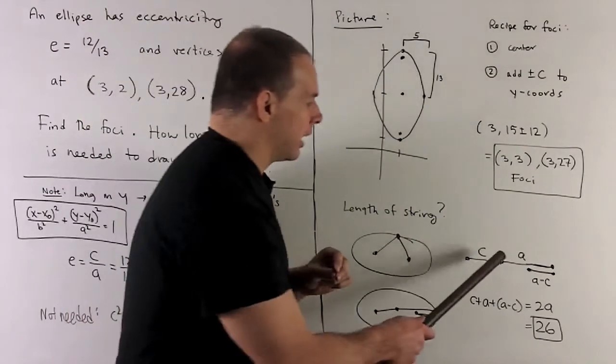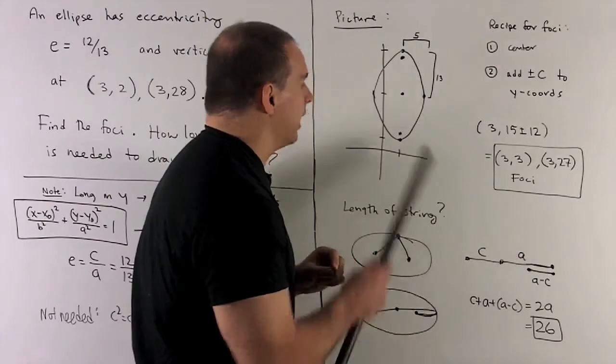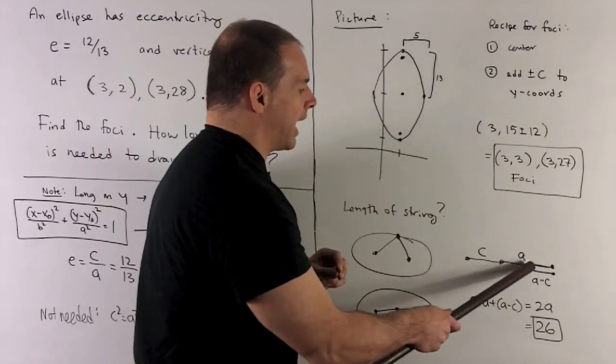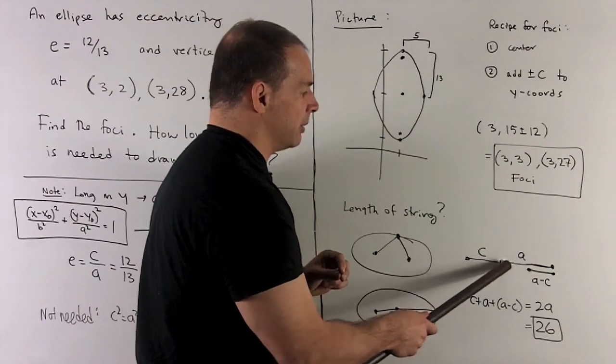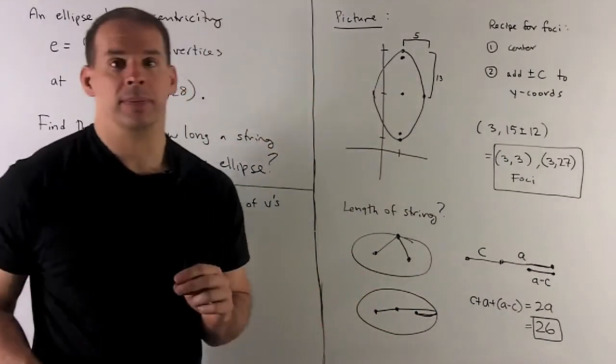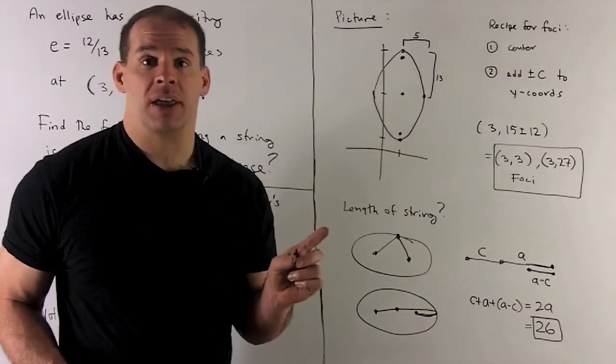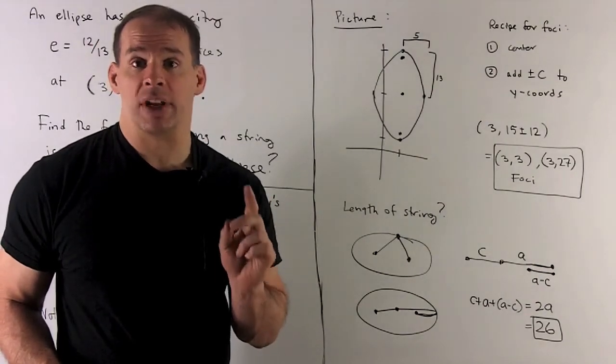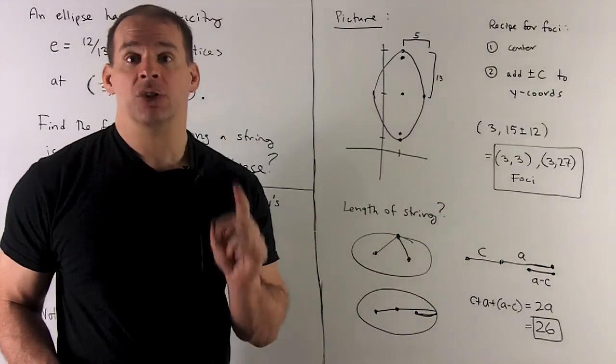Now if you notice, the long distance is going to be a, that would be going all the way up here. And then the shorter distance going out to our focus is going to be c. So what's left over is going to be a minus c. I add up all three terms, then what we're left with is 2a. So the length of string that I need is going to have to be 26.